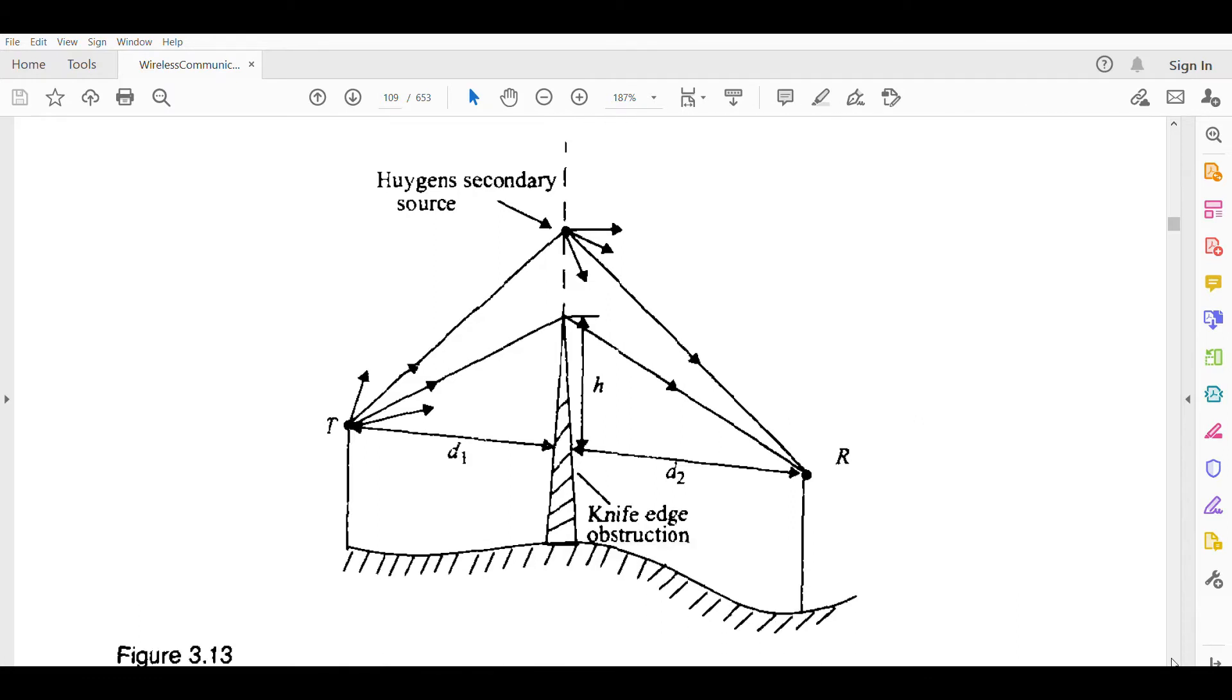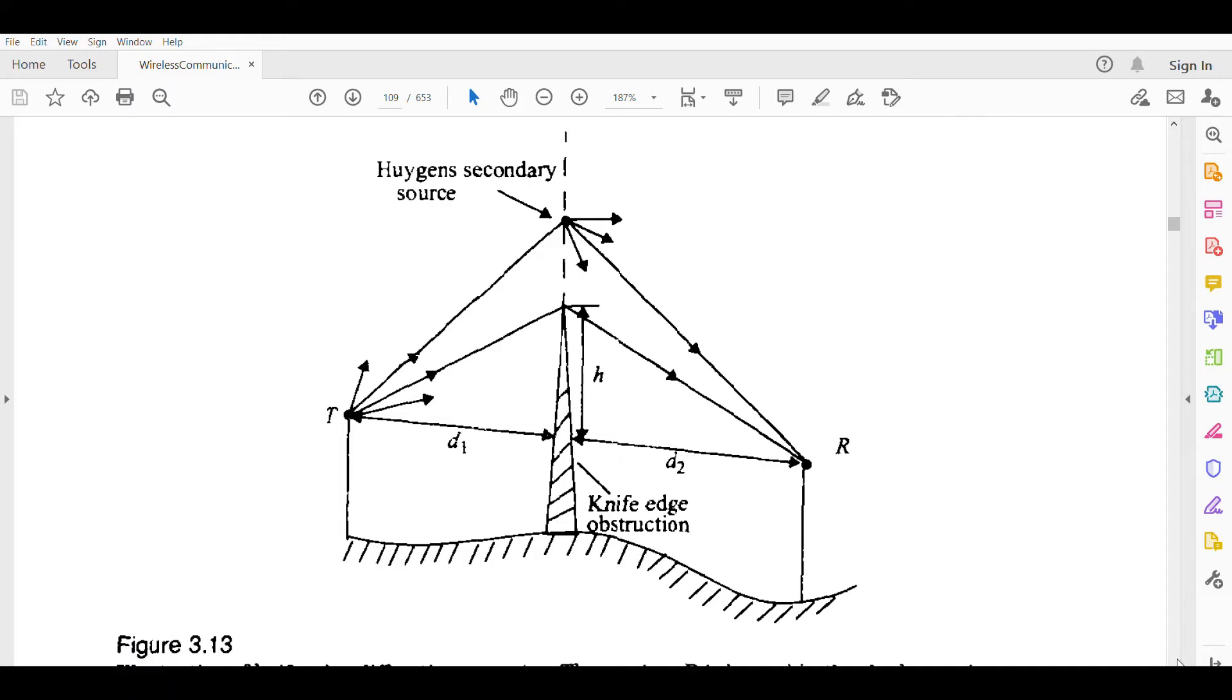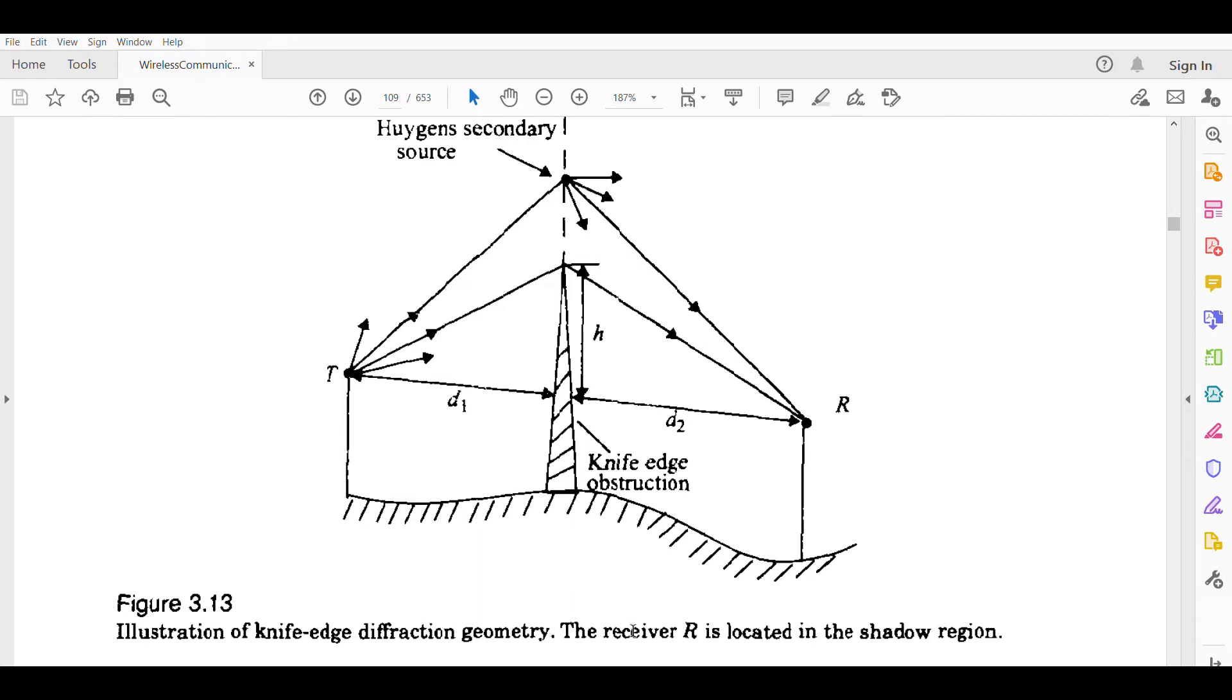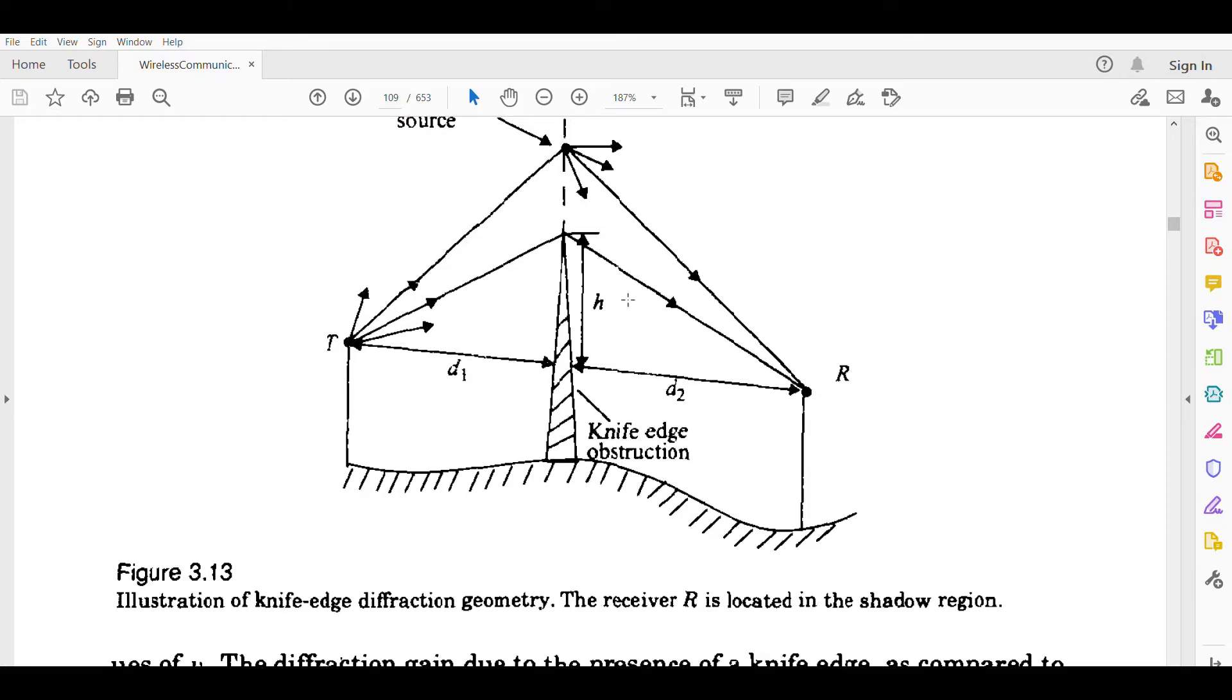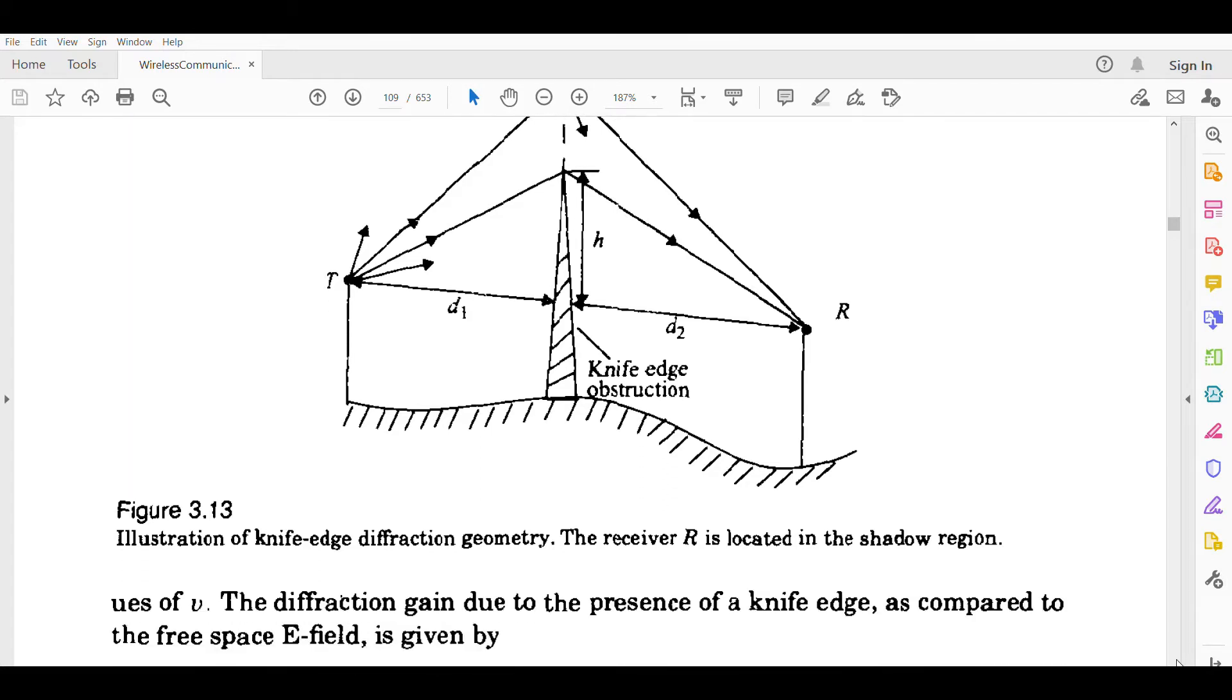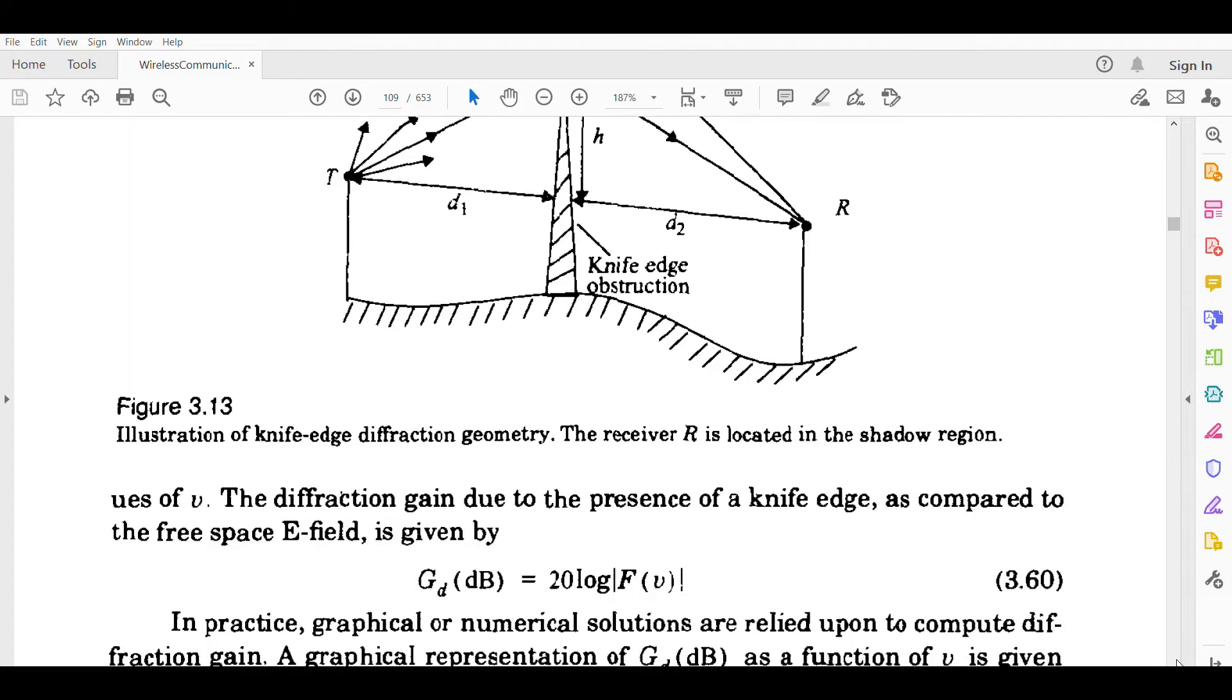This is the model - it uses secondary sources. This is your knife edge obstruction, with distances D1 and D2 which we saw in the last class. This is the transmitter and receiver, and this is the height h. This illustrates knife edge diffraction geometry where the receiver R is located in the shadow region. If the receiver is behind the obstruction, it will be in the shadow, so direct communication will not reach it.